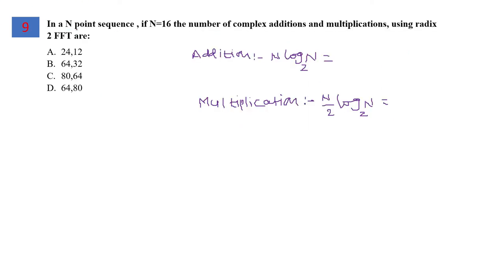Question number 9: In an N-point sequence where N equals 16, find the number of complex additions and multiplications using radix-2 FFT. This is a formula-based question. For complex additions, the number is given by N log₂(N).